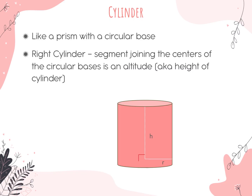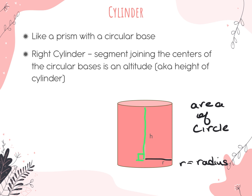Next is the definition of a cylinder. A cylinder, just like a prism, has a base — but this time the base is a circle. For a right cylinder, the altitude or height is the perpendicular segment joining the centers of the two circular bases. We need to know the radius to calculate the area of that base, because the area of a circle is π r squared.